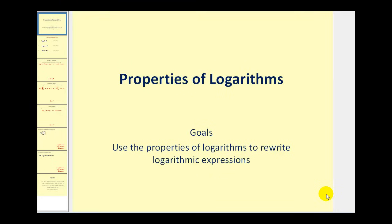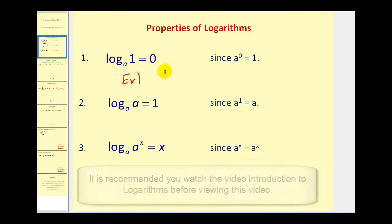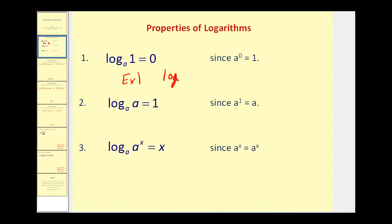Welcome to a lesson on the properties of logarithms. The first property is log base A of one is equal to zero. This is true because A to the power of zero will always equal one. For example, log base eight of one will always equal zero because A to the zero is equal to one.